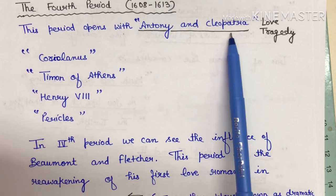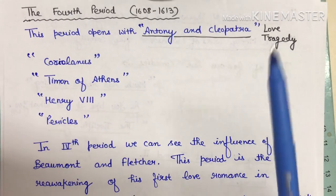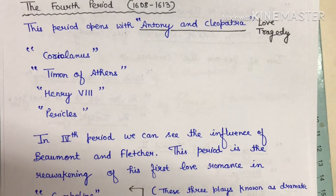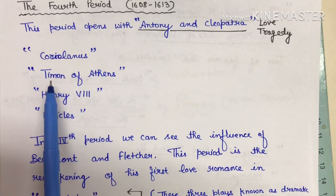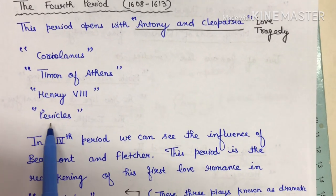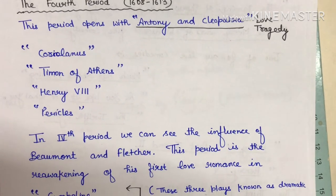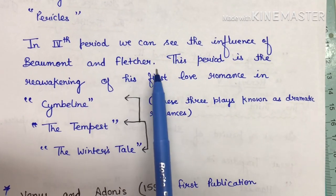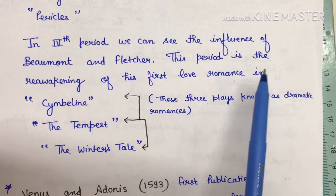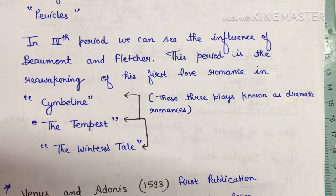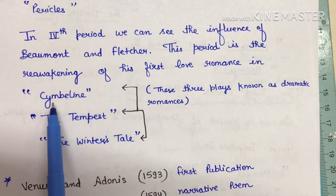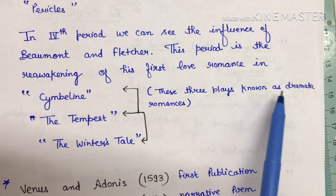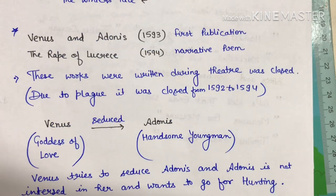The fourth period starts from 1608 to 1613. It opens with Antony and Cleopatra — a love tragedy that shows Shakespeare's weaker dramatic grip compared to its immediate predecessors. It also includes Coriolanus, Timon of Athens, Henry 8, and Pericles. We can see the influence of Beaumont and Fletcher in this period. It represents a reawakening of his first love — romance — with Cymbeline, The Tempest, and The Winter's Tale, known as dramatic romances.